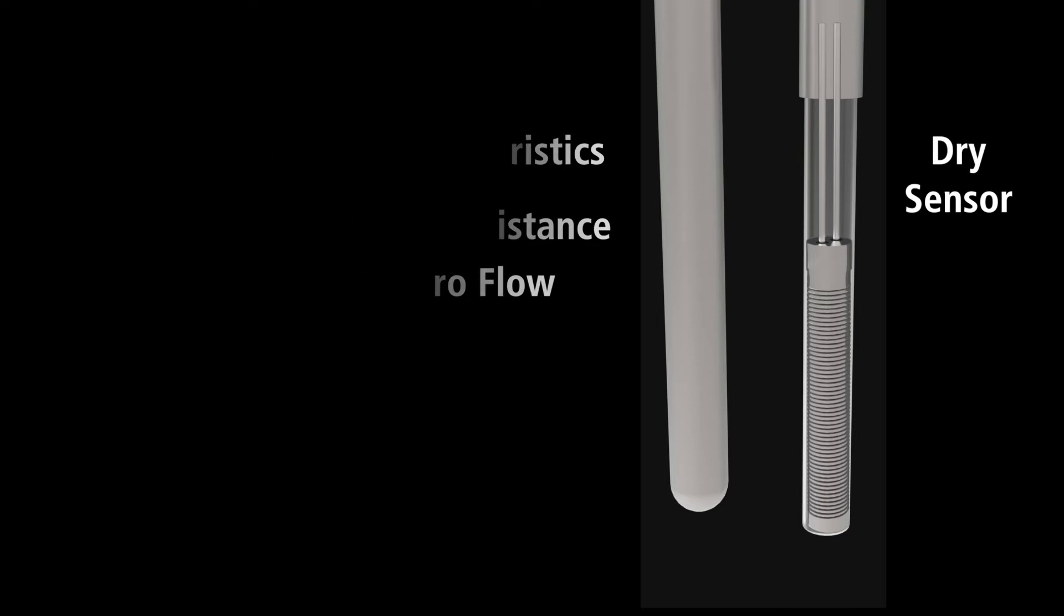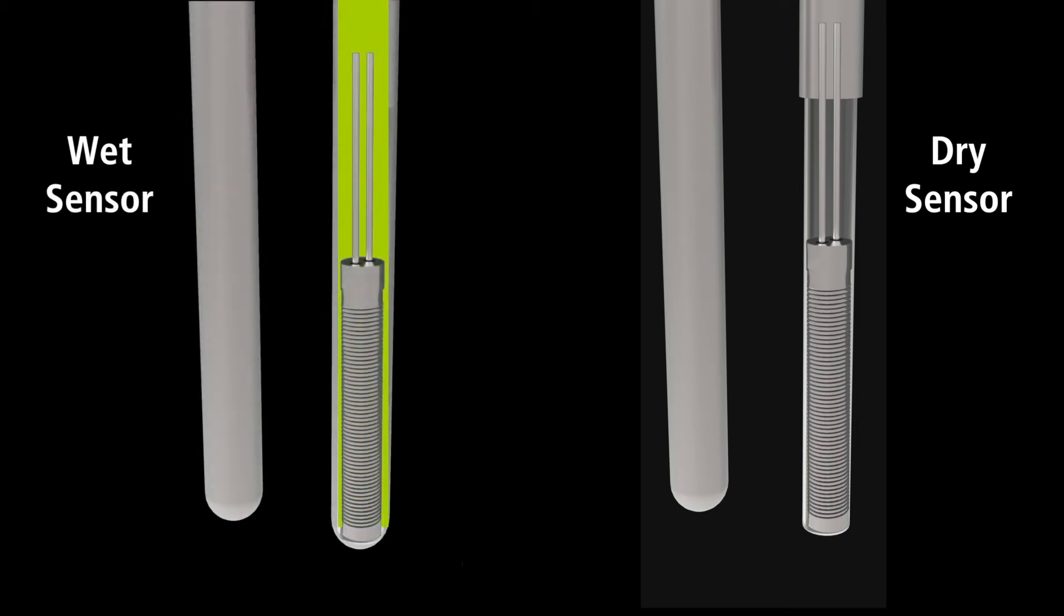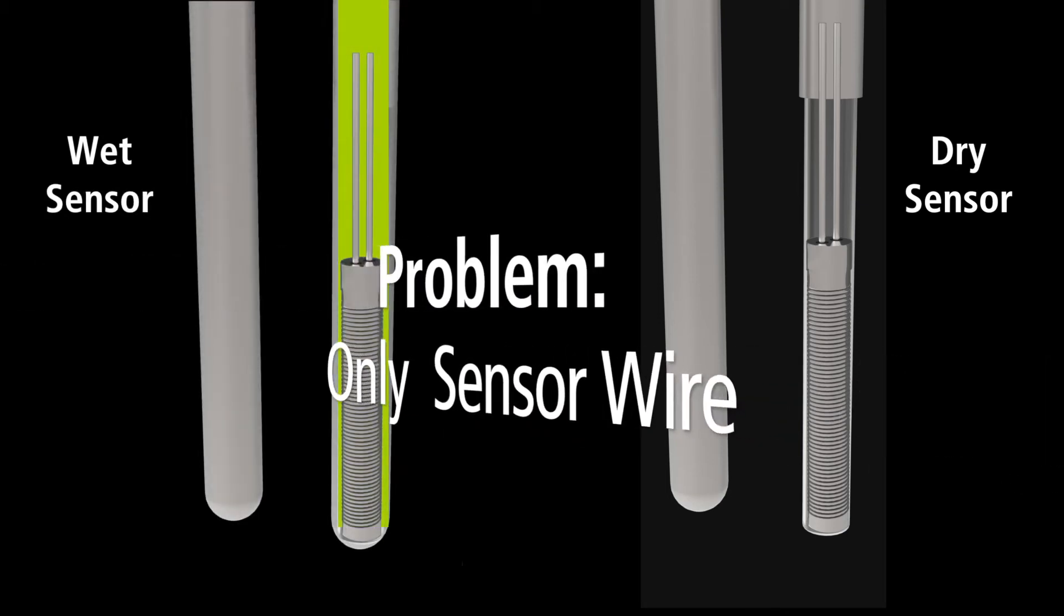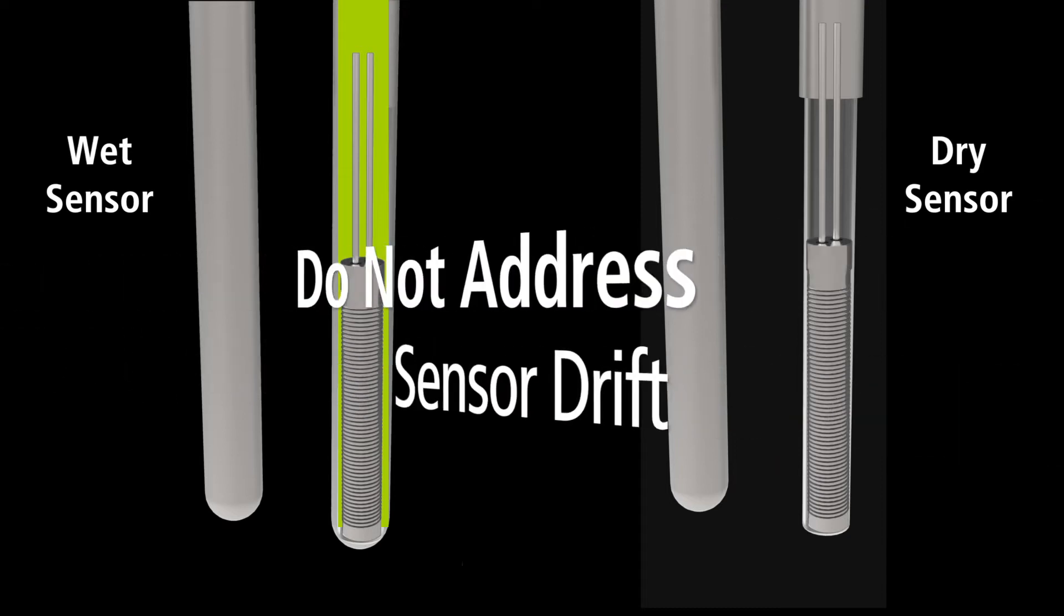The problem with both methods is that they only measure the characteristics of the internal sensor windings and do not address sensor drift.